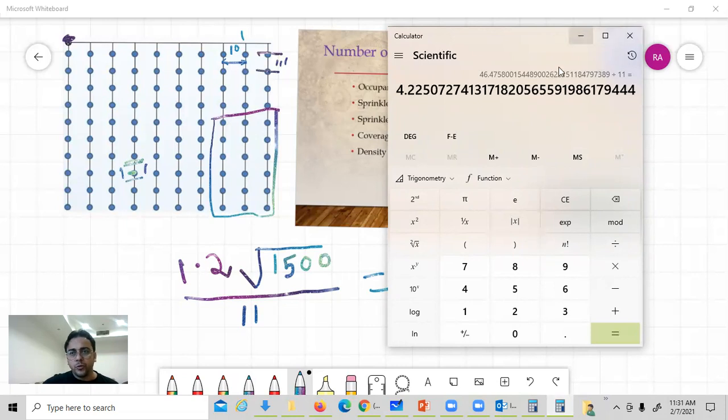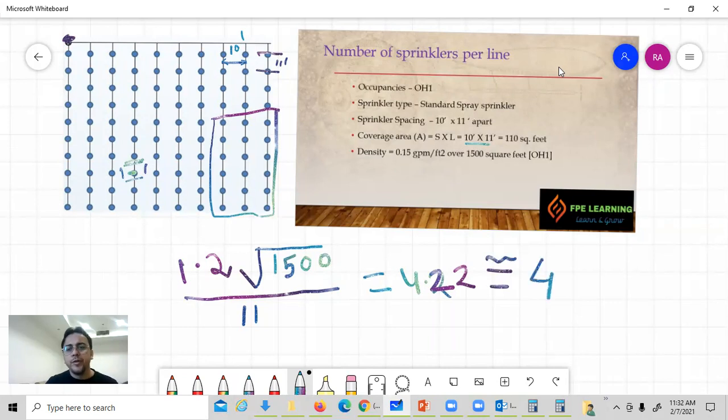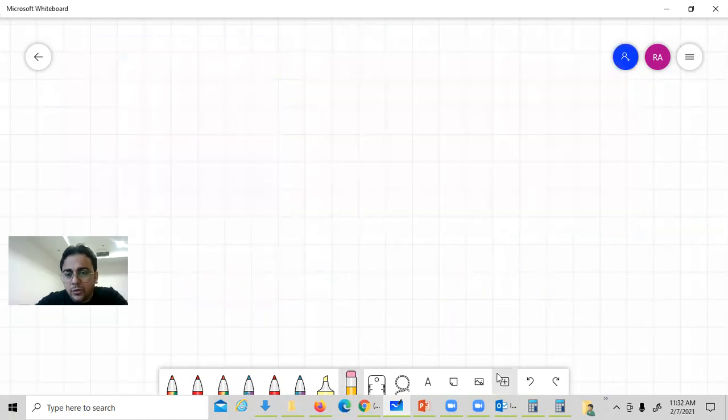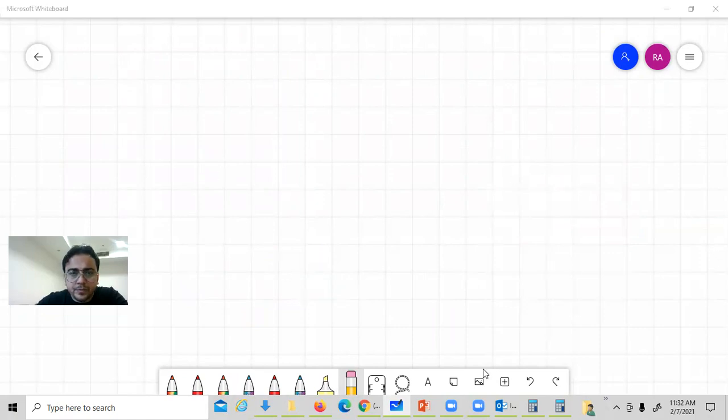We need 4.22 sprinklers in that line. Let's consider 4.22 as 4. We need 4 sprinklers in the hydraulic design area. I will upload the PowerPoint again.